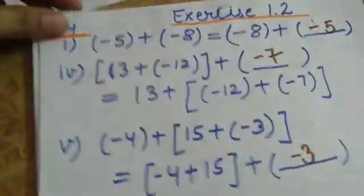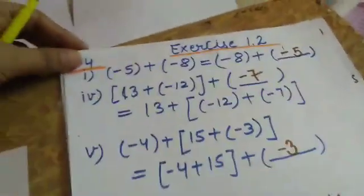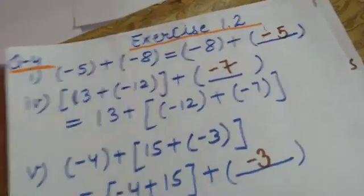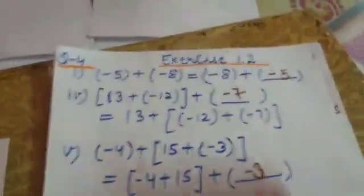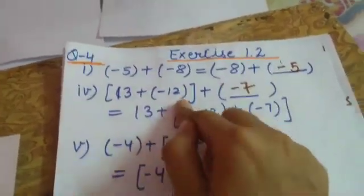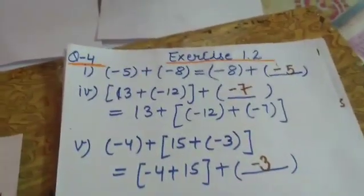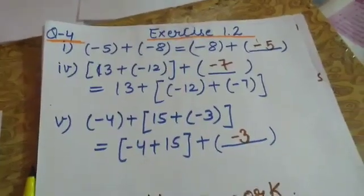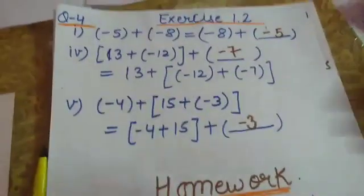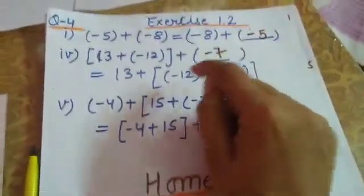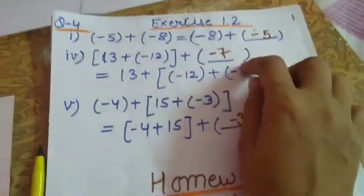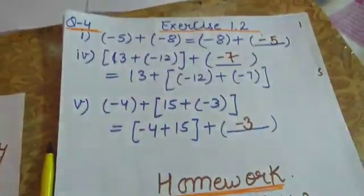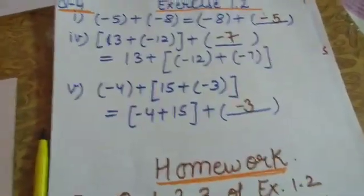Now let us look at question number 4 of exercise 1.2, which is related to the properties we have learned. You have to fill in the blanks using properties. First part: minus 5 + (minus 8) = (minus 8) + (minus 5). Comparing with properties, this is the commutative property — the answer in the blank is minus 5.